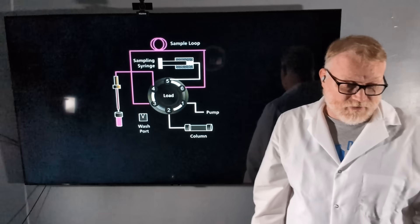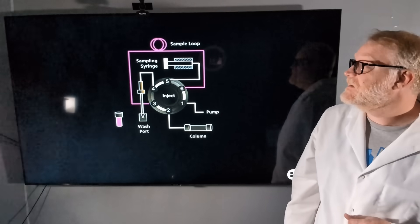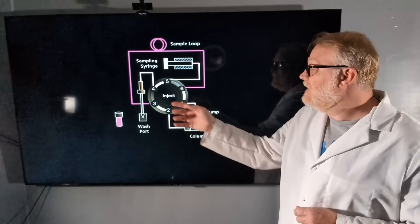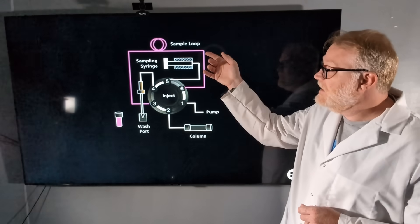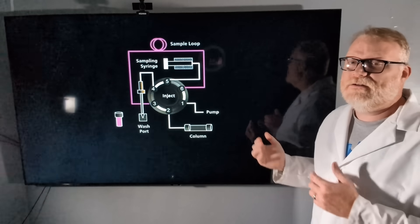Once we have our loop filled, we're going to switch to inject. That now connects our pump to our sample loop, to our column, and then to our detector.